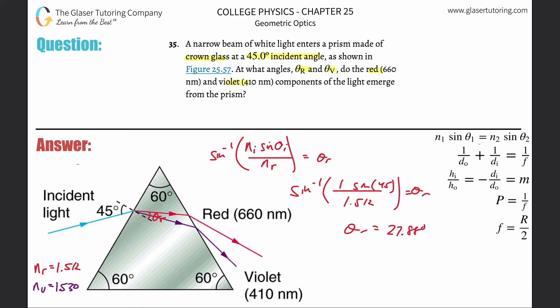Now let's do the same for violet light. The calculation is identical except we use the index of refraction for violet light in crown glass, which is 1.530. So inverse sine of sine(45°) divided by 1.530 gives us approximately 27.53 degrees — a little smaller than the red, as expected.